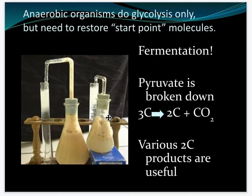Anaerobic organisms also do glycolysis, but they need a starting point — and this is called fermentation. In fermentation, pyruvate is broken down into sets of two carbons and carbon dioxide, and NAD+ gets reduced. There are two types of fermentation: lactic acid fermentation and alcoholic fermentation.